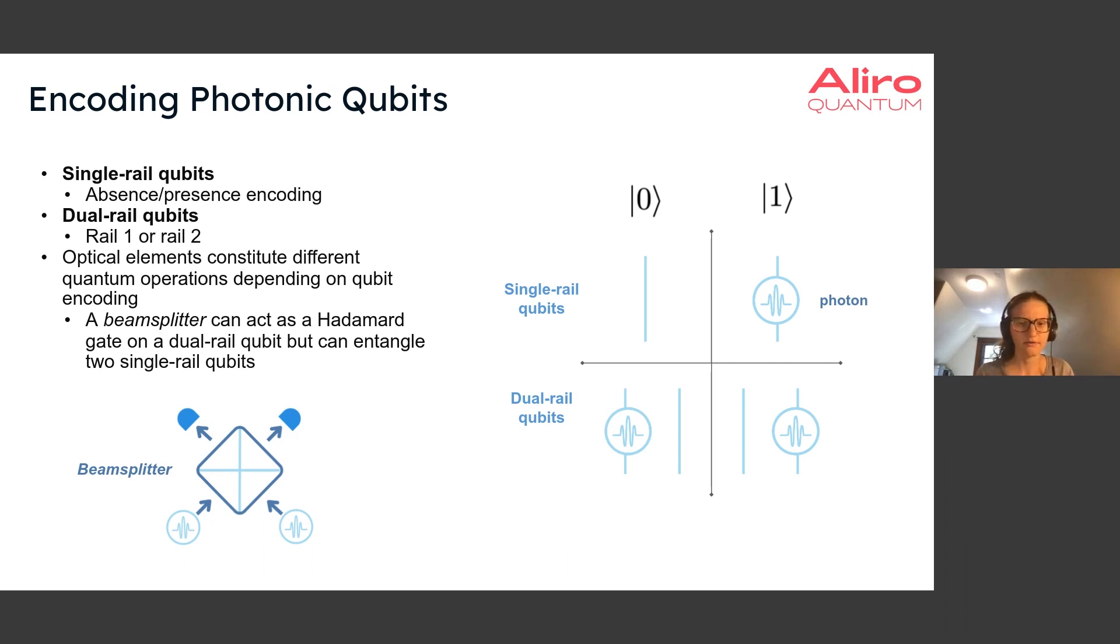Another way to encode photons is through dual rail encoding. In this encoding, we have two rails or two fibers, two paths for the photon to travel along. And the state that the photon is in will depend on the rail that it's on. If it's on the left rail, then it will be in the zero state. And if it's on the right rail, it will be in the one state. And again, it could exist in a superposition of these rails.